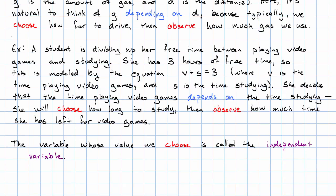The variable whose value we choose is called the independent variable. It doesn't depend on anything. The variable whose value we observe is called the dependent variable. It depends on the independent variable.